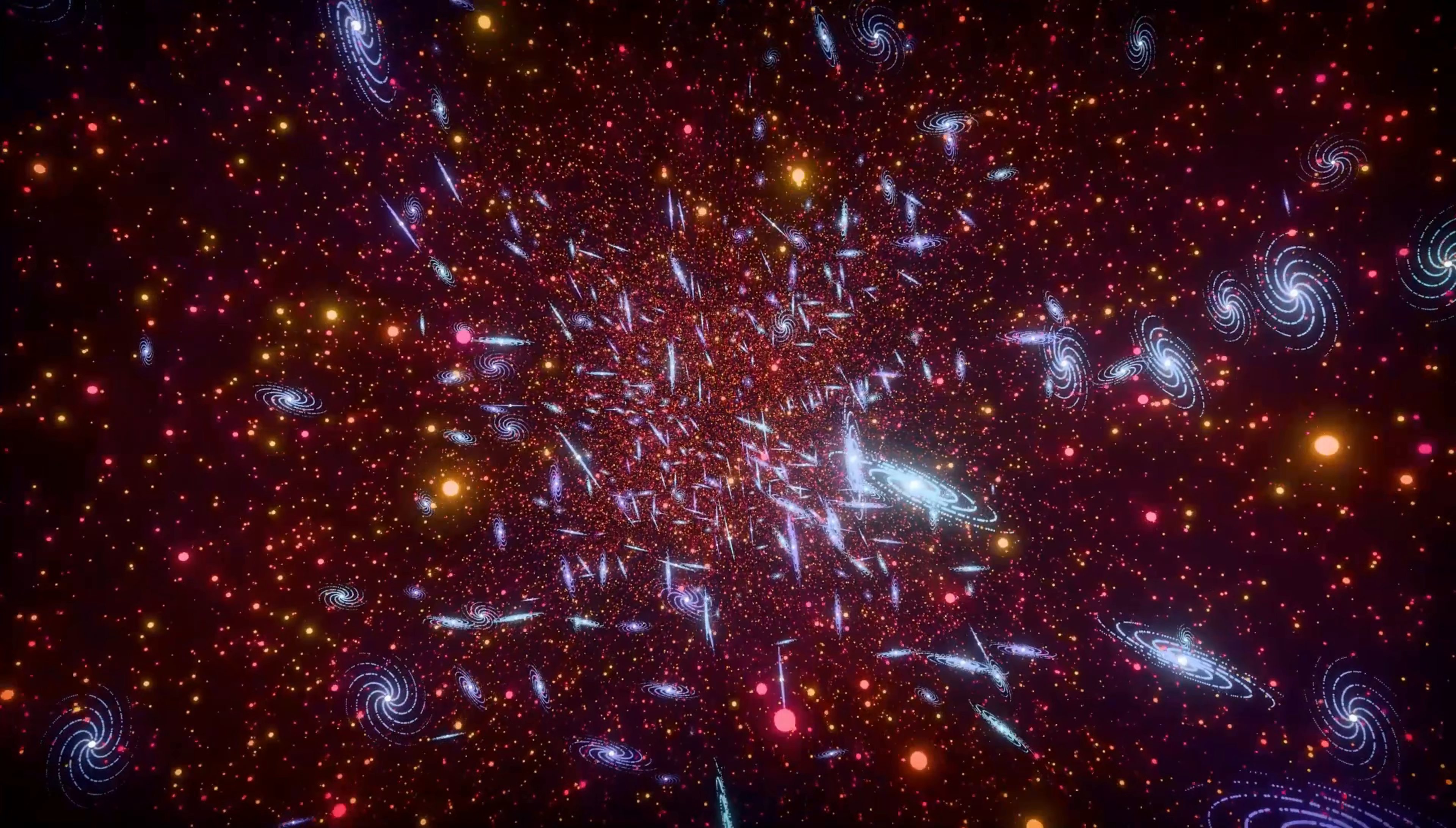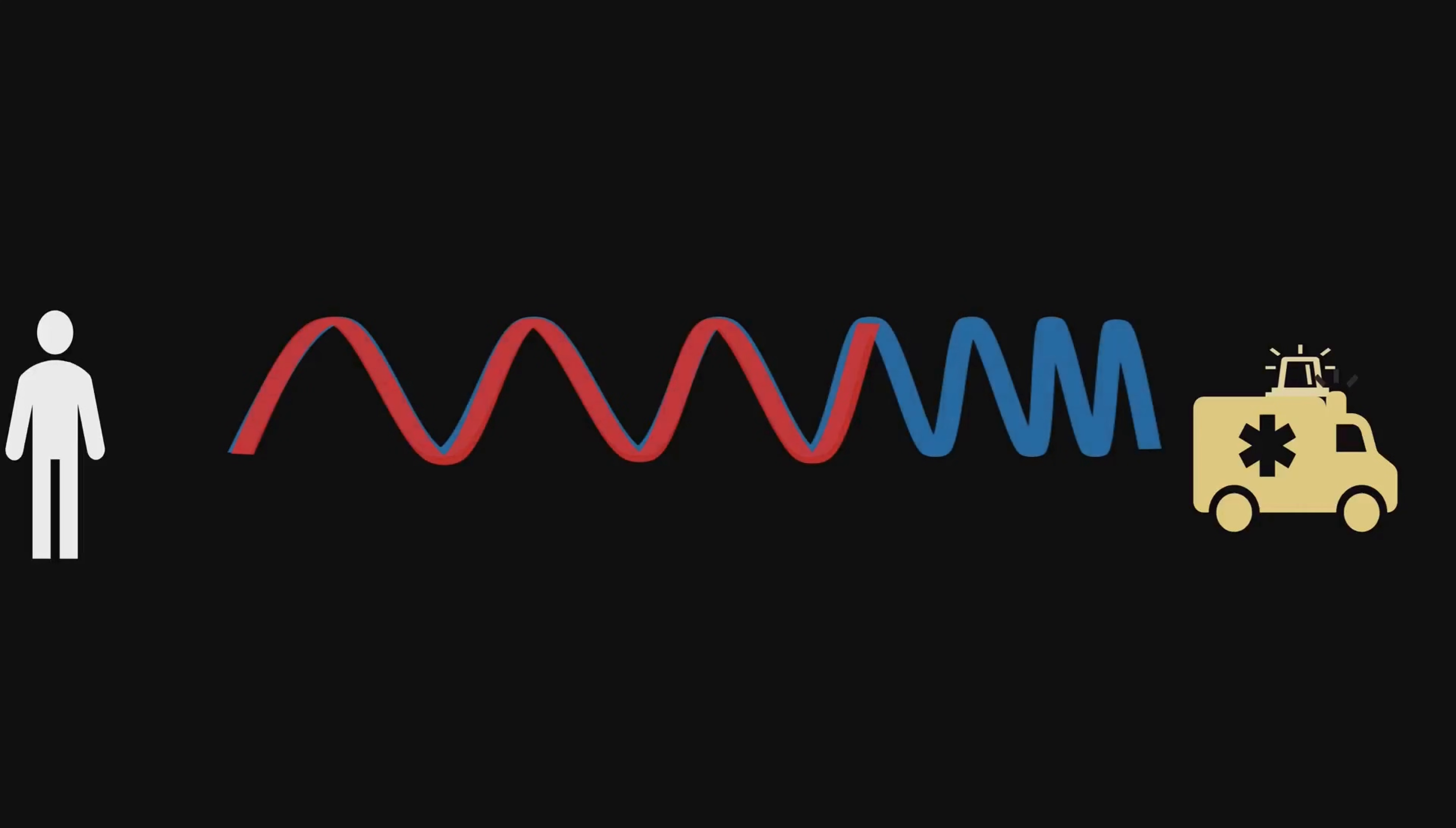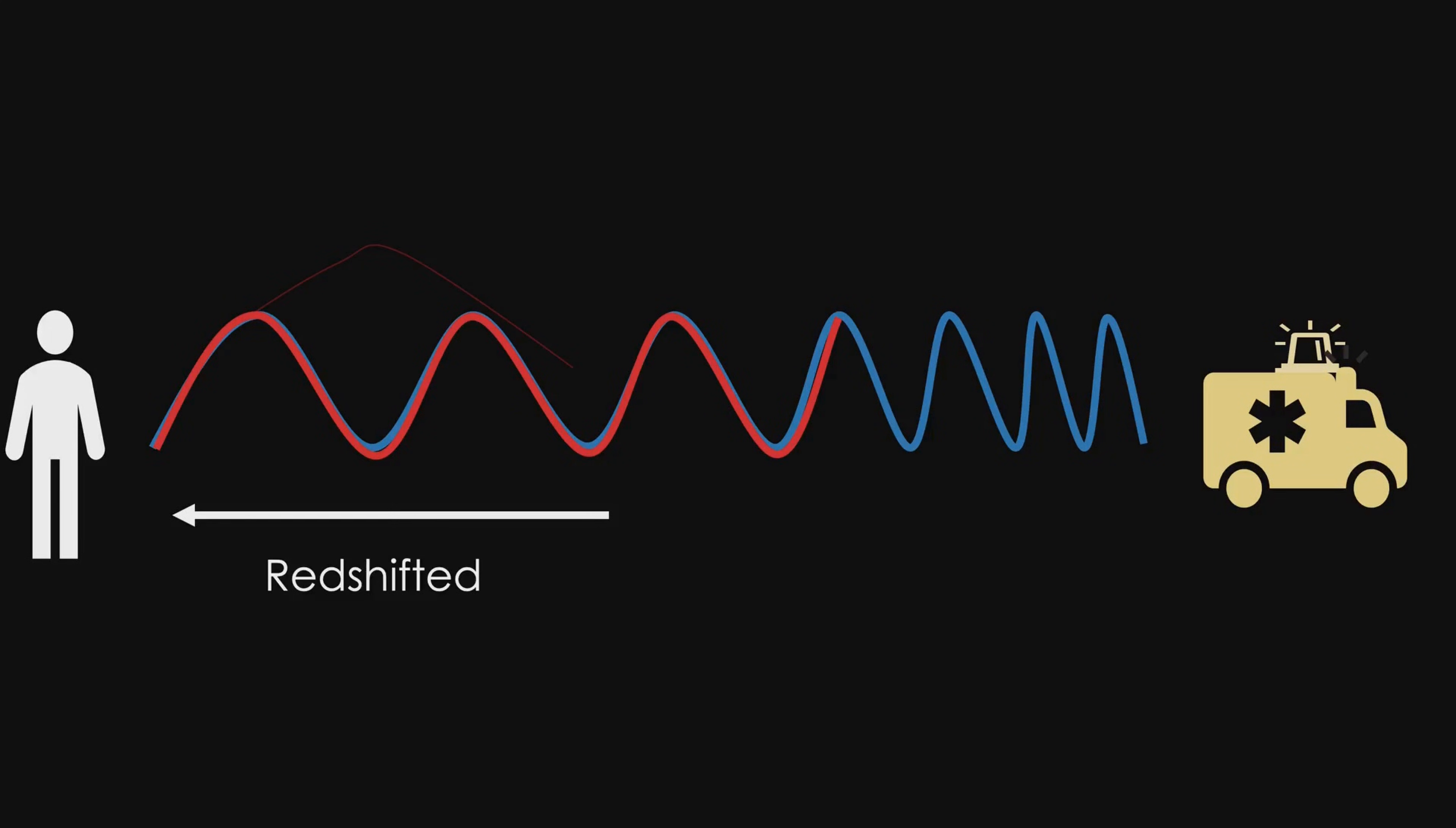Before we dive into how Quipu was discovered, let's quickly understand a crucial tool astronomers use: redshift. Imagine a siren. As it moves away from you, the sound waves stretch out, their wavelength increasing. This makes the pitch get lower, and since red light has a longer wavelength, we call this lower pitch redshifted.